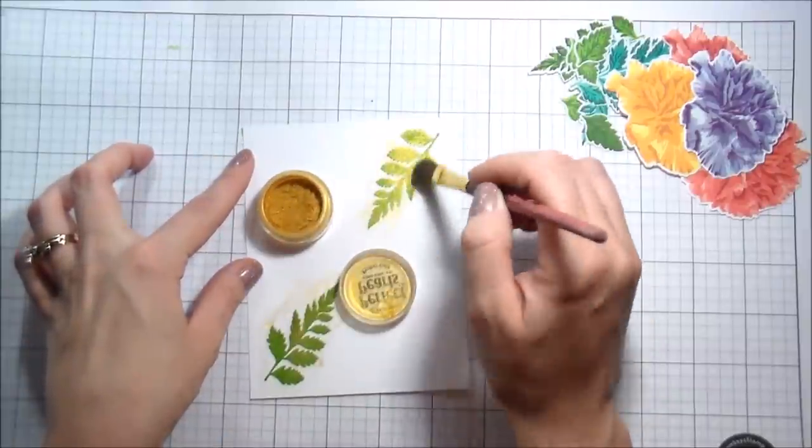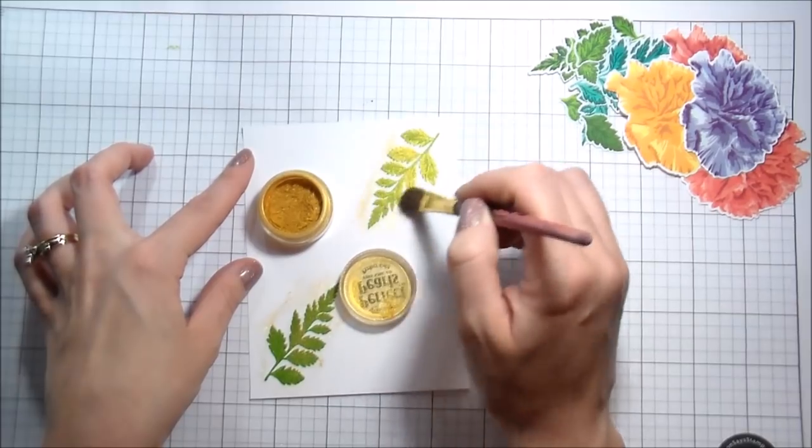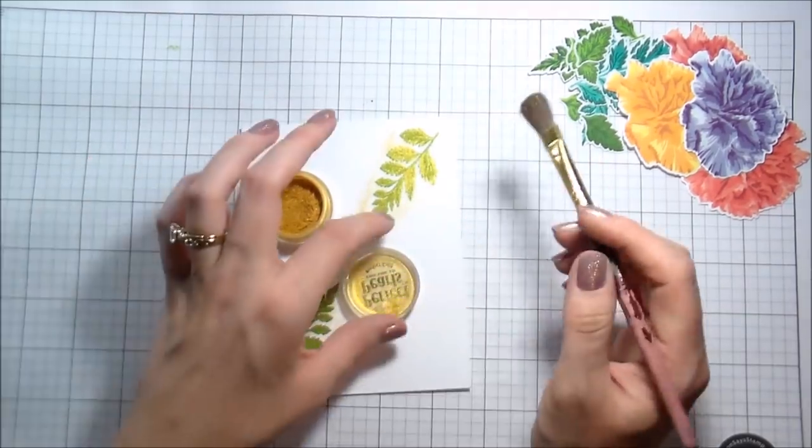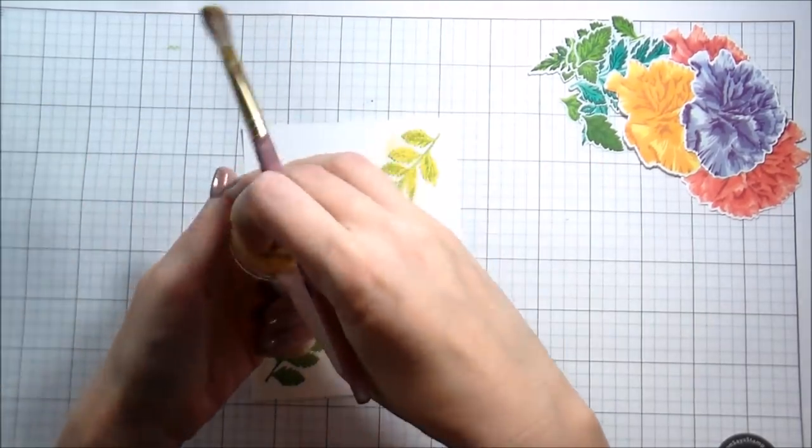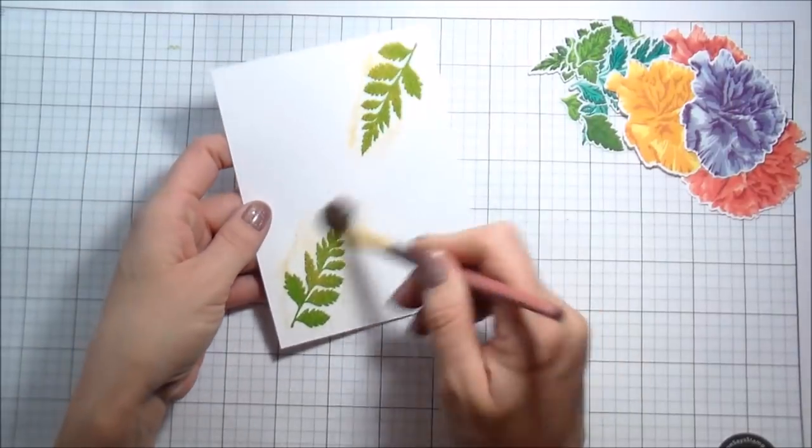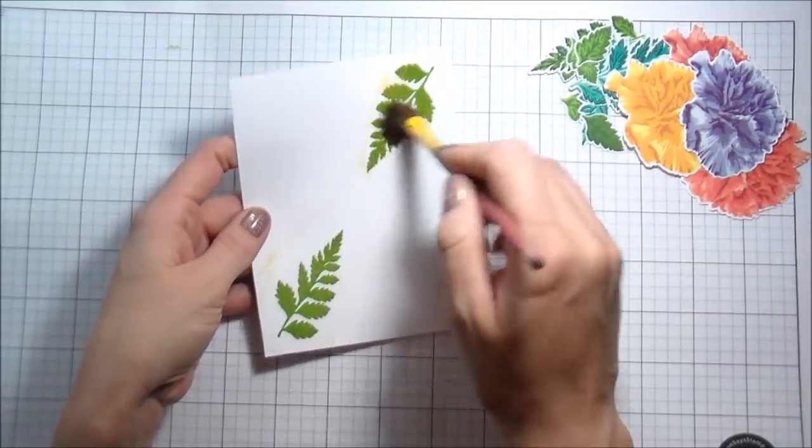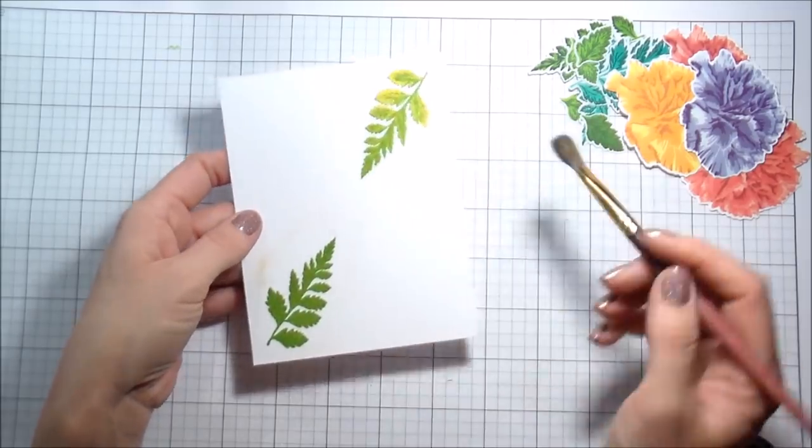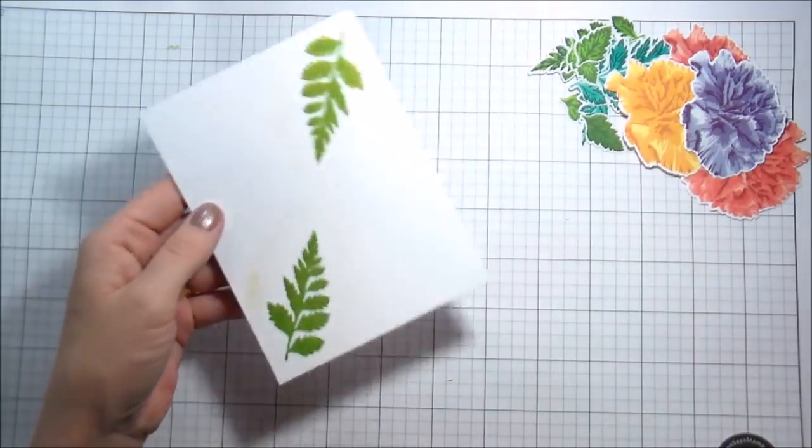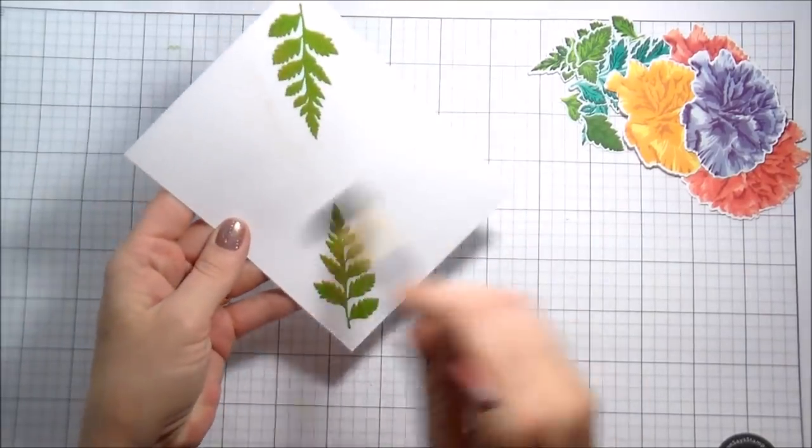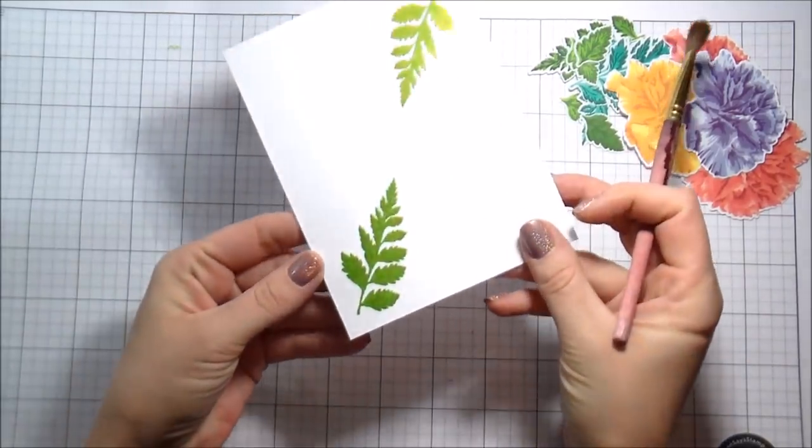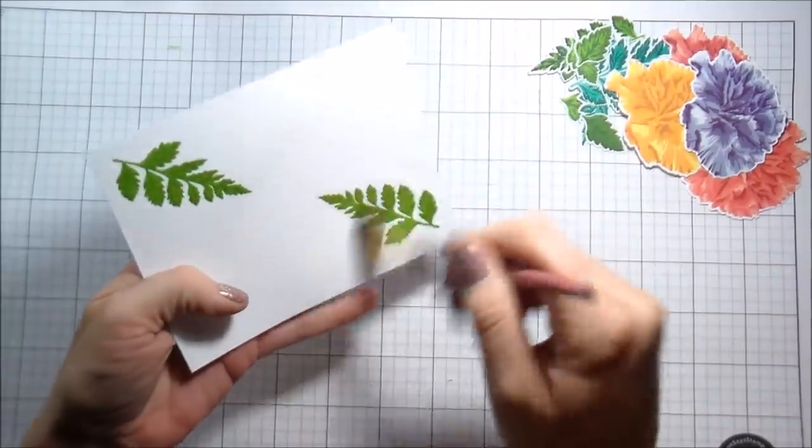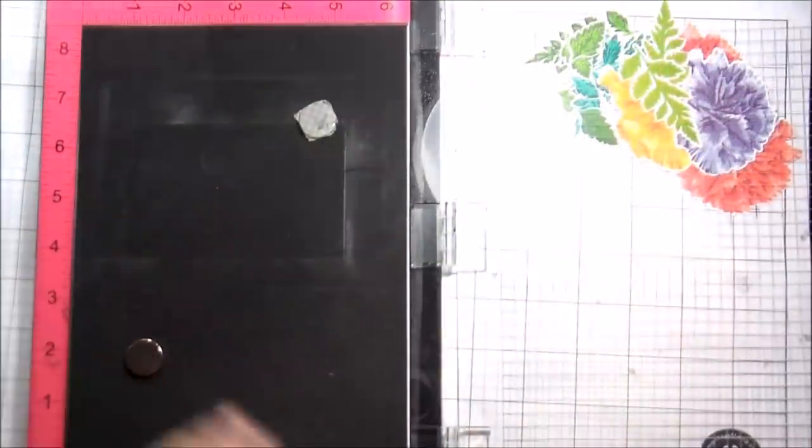So once I put that on, I'm just going to buff off the extra. You can still see it's still nice and gold and then perfect pearls set with water. So I just mist some in the air and wave my paper through it.